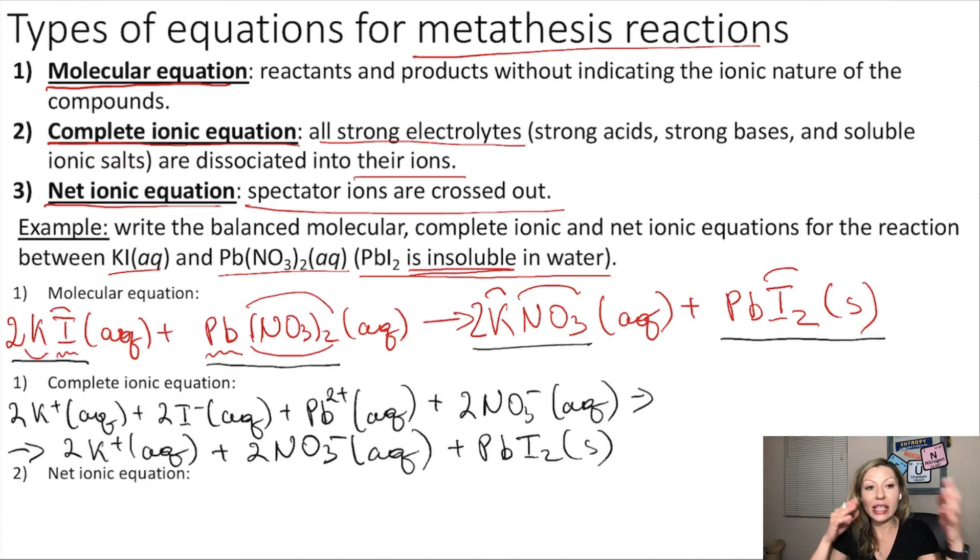Now, in the net ionic equation, the third type, we have to cross out the so-called spectator ions. The spectator ions are the ions that actually do not change from the reactant to the product side. Let me show you what I mean. For example,